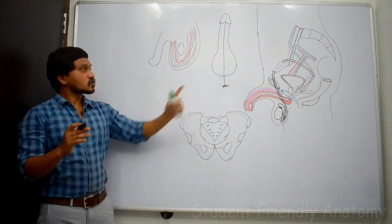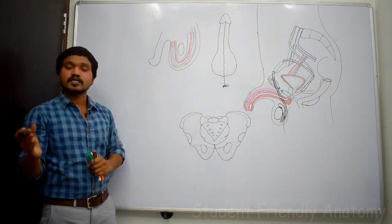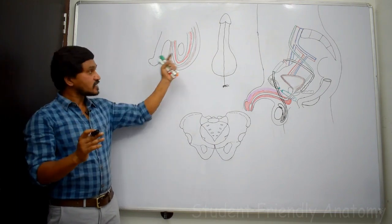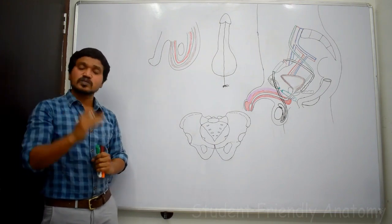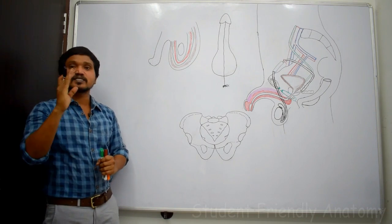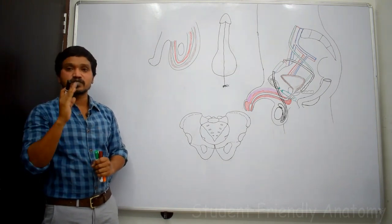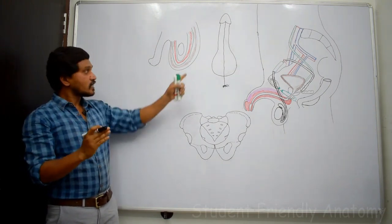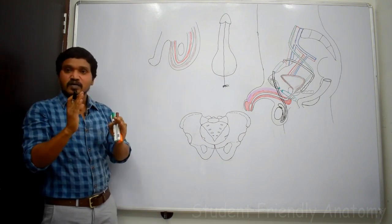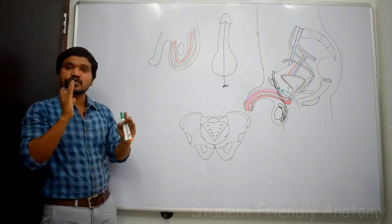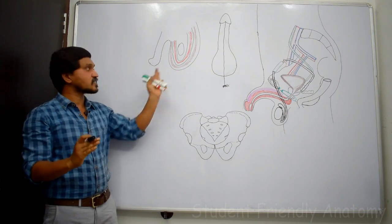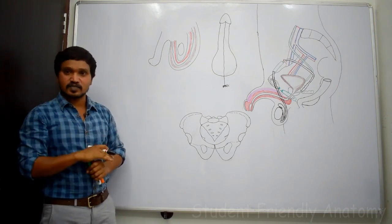We have seen that the scrotal sac is divided externally by the raphae or ridge. But internally, the two sacs are separated by one median septum, which is formed by the dartos muscle. The dartos muscle in the median part fuses and forms the septum that separates the two scrotal sacs.